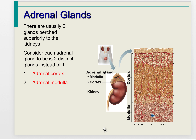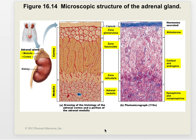The adrenal glands can be considered two glands in one: the adrenal cortex and the adrenal medulla. The adrenal cortex is divided into three zones: the zona glomerulosa, zona fasciculata, and zona reticularis. Aldosterone is produced in the zona glomerulosa; cortisol and androgens are produced in the zona fasciculata and zona reticularis; and the adrenal medulla produces epinephrine and norepinephrine.